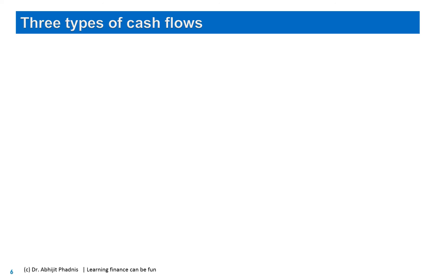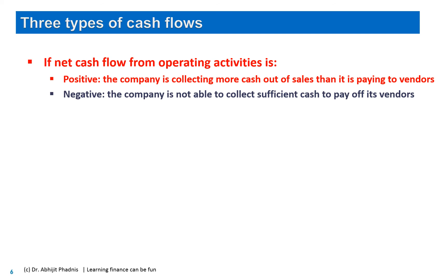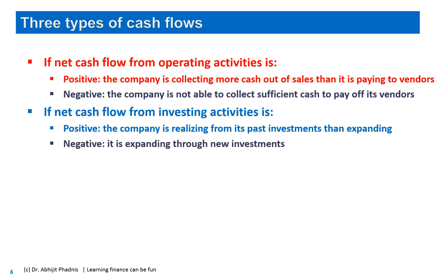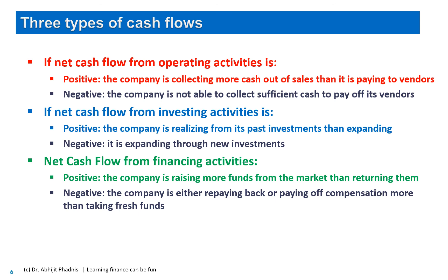To summarize: if net cash flow from operating activities is positive, the company collects more cash from sales than it pays vendors; if negative, it cannot collect enough to cover vendor payments — not a good sign. If net investing cash flow is positive, the company is realizing money from past investments rather than expanding. If negative, it is expanding through new investments. Net financing cash flow positive means raising more funds than returning; negative means repaying or compensating more than taking fresh funds.